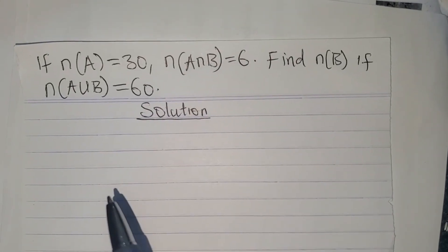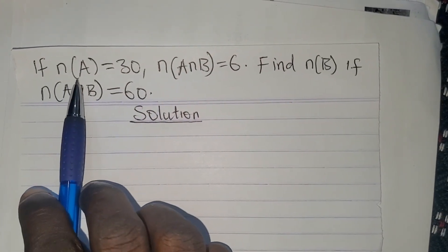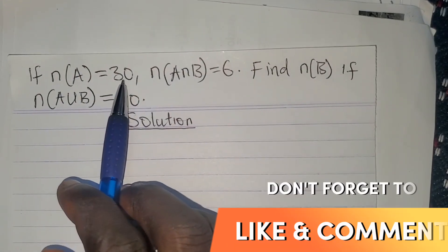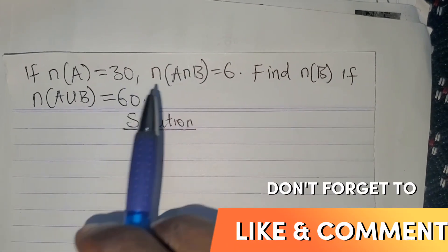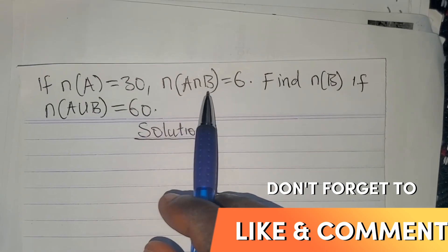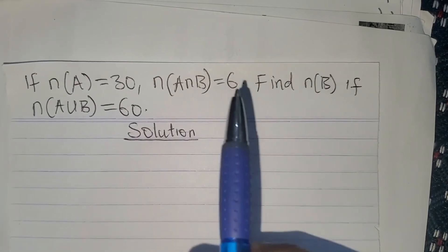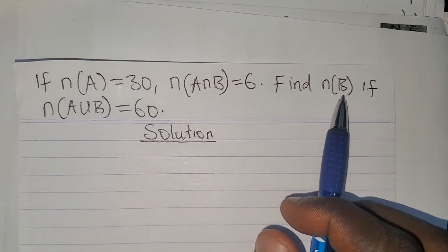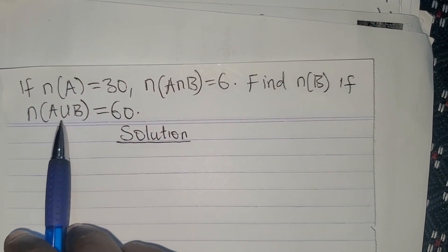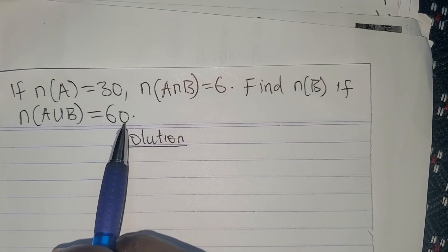Let's solve this problem on set theory. We're told that the number of elements in A is 30, the number of elements in A intersect B is 6. Find the number of elements in B, if the number of elements in A union B is 60.